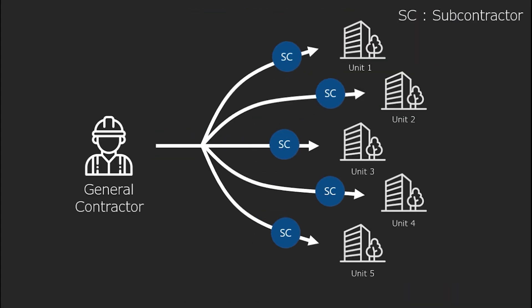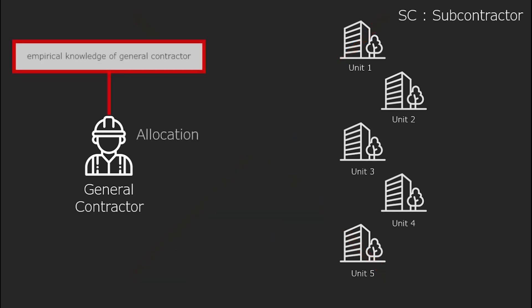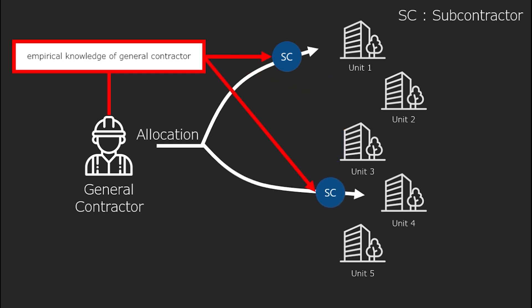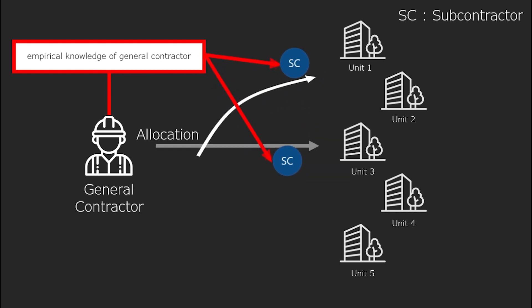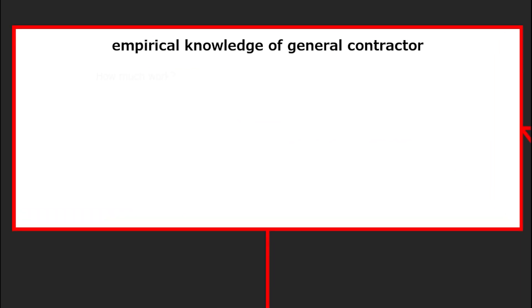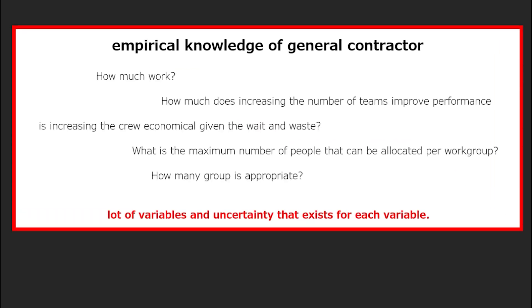General contractors cannot arrange subcontractors indefinitely. The allocation plan must be established based on the construction quantity, making quantitative analysis of the project important. However, subcontractor allocation depends on the empirical knowledge of the general contractors. The complexity of resource allocation depends on the characteristics of the project, and in the field this problem has been solved based on empirical knowledge. There may be limitations in this process because there are many variables and uncertainties.